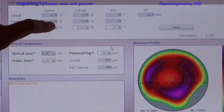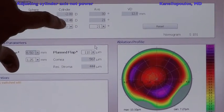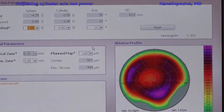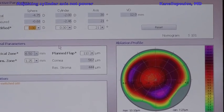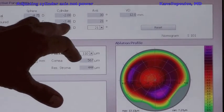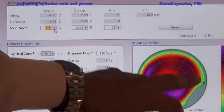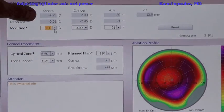The topography, of course, cannot measure sphere, so its refraction is minus 2.46 at 21 degrees. This is what we actually decided to do: use the topography-derived cylinder. We see that the angle kappa here is giving us this triangular direction. We're going to try and neutralize it.